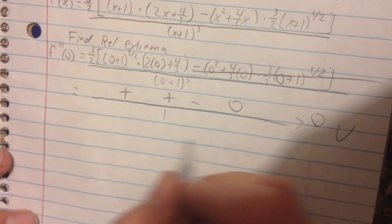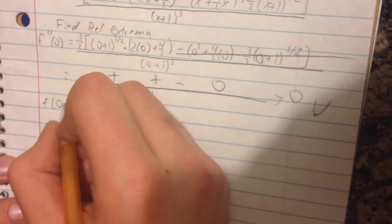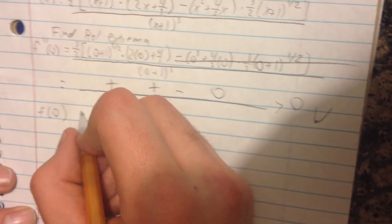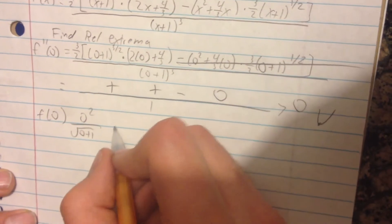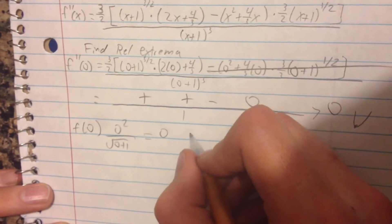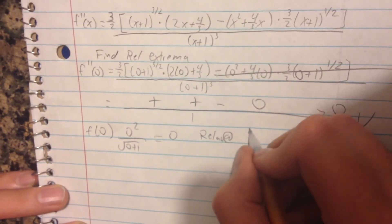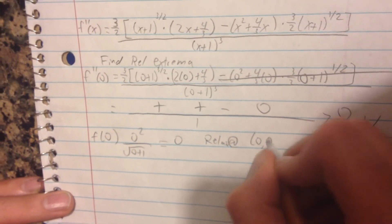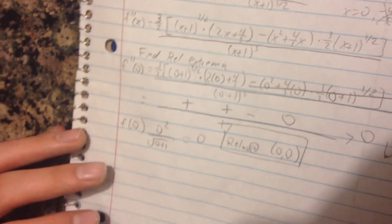That means it's greater than 0, so it's going to be concave up. Since it's concave up, we know it's going to be a minimum. You plug 0 into the original problem: 0 squared over the square root of 0 plus 1. 0 is the numerator, so it equals 0. So we have a relative minimum at (0, 0). And that is how you do number 24. Bada bing, bada boom.